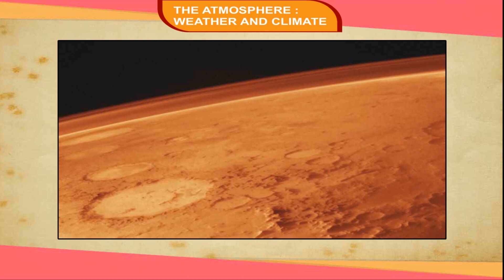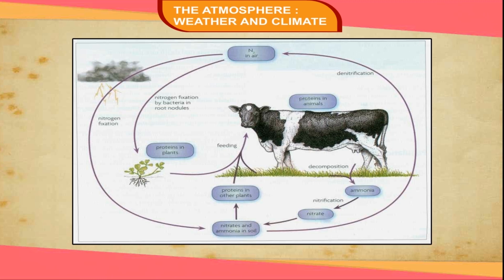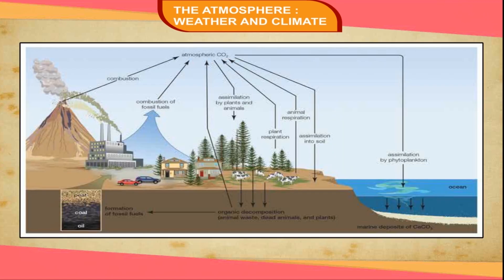Nitrogen, the most abundant gas, is useful for the survival of plants. Atmospheric nitrogen is converted into nitrogen compounds by nitrogen-fixing bacteria present in the soil. Plants absorb nitrogen compounds and convert them to proteins. Animals take in proteins by eating plants or other animals. Nitrogen returns to the atmosphere when denitrifying bacteria act on the animal wastes and the dead bodies of plants and animals.